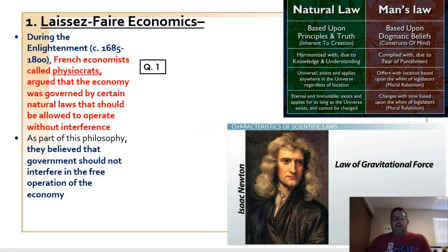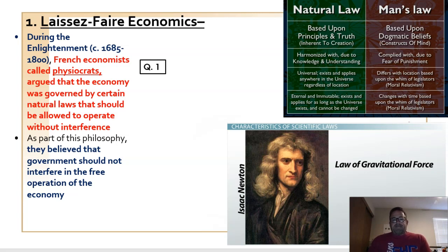So where did capitalism come from? Before there was capitalism, there was something we could call proto-capitalism, known as laissez-faire economics. During the Enlightenment — roughly 1685 to about 1800 — a group of French economists called physiocrats argued that natural laws governed the economy, and that governments' attempts to interfere or regulate the economy were dangerous to the economic health of a country. They felt the best thing for governments to do was very little.